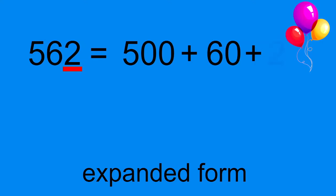Two ones is 2. 562 equals 500 plus 60 plus 2. Well, let's try this again with another number. 917. If we were to write this in expanded form, we would look at the hundreds place first.